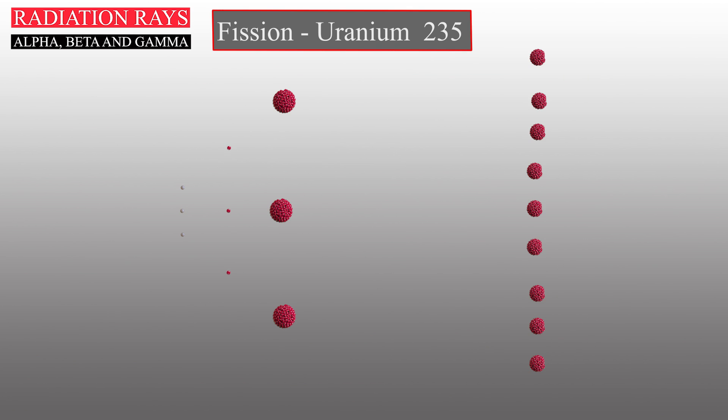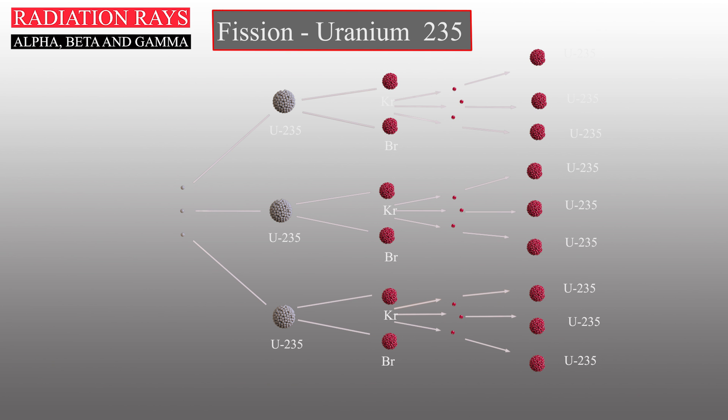Three forcefully ejected neutrons can each strike an atom of uranium, resulting in the case of an atomic bomb, a catastrophic chain reaction.